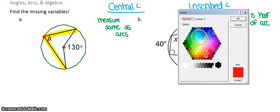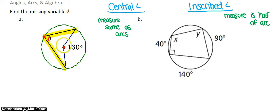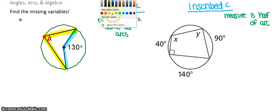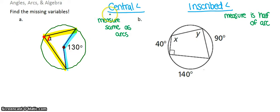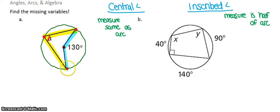A central angle would be one attached to the center, like the blue one here, while the yellow one is the inscribed angle. A central angle has the same measure as its intercepted arc — so if this central angle is 130°, its intercepted arc, which shares the same two endpoints, is also 130°.